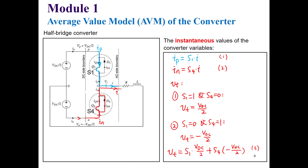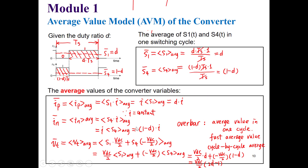Before continuing to the simulation I would like to review the concept. The average value model is based on the average of the switching states — based on the switching function of S1 and S4, the upper and lower switches of the half-bridge converter.